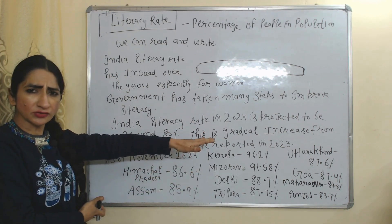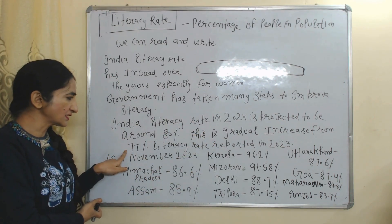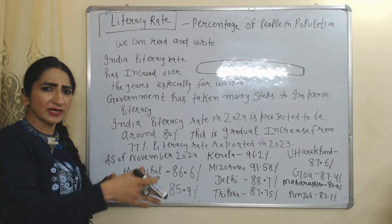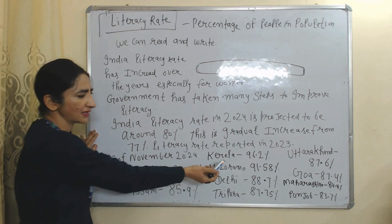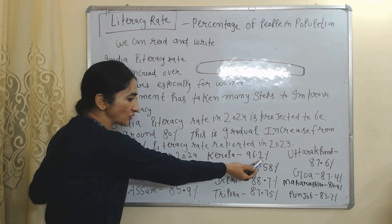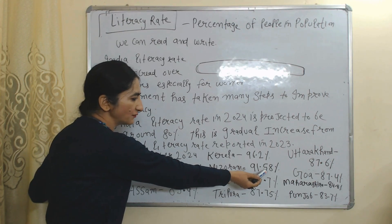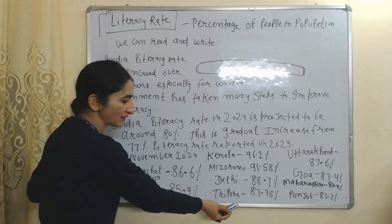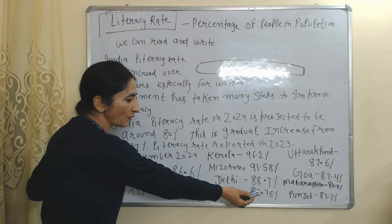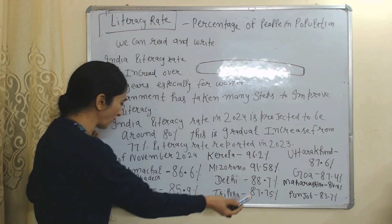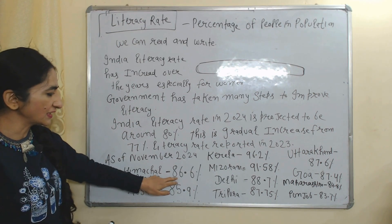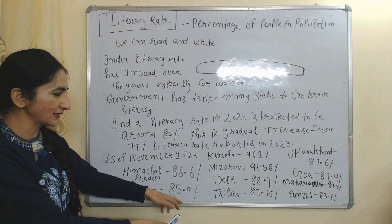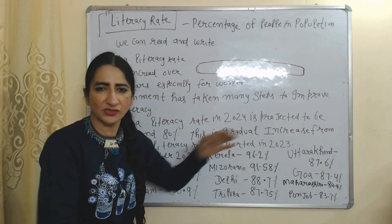India's literacy rate varies across states. In Kerala it is around 96.2%, Mizoram 91.58%, Delhi 88.7%, Tripura 87.75%, Himachal Pradesh 86.6%, and Assam 85.9%, with other states showing varying rates as well.